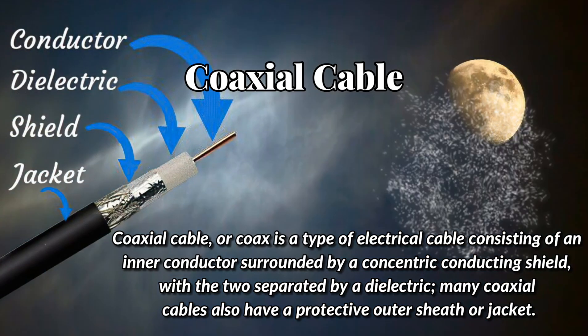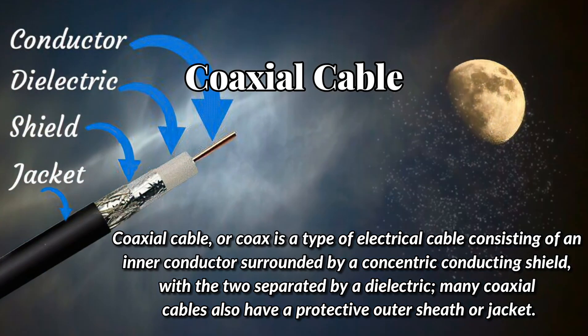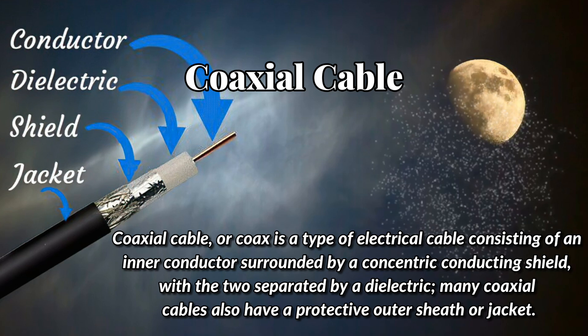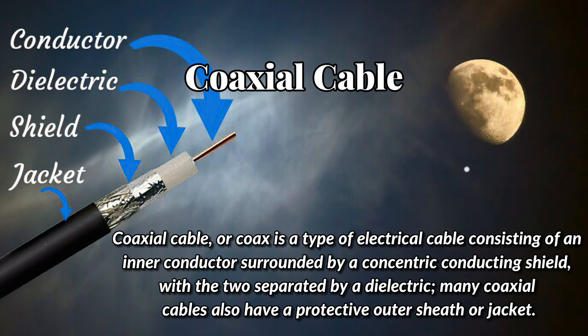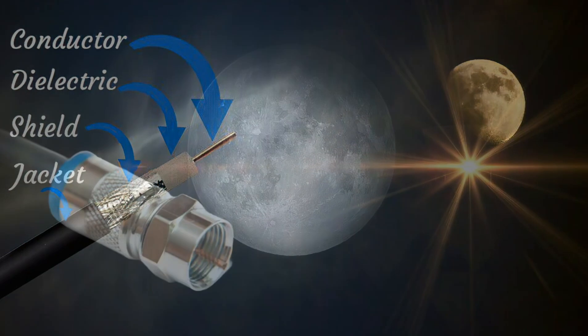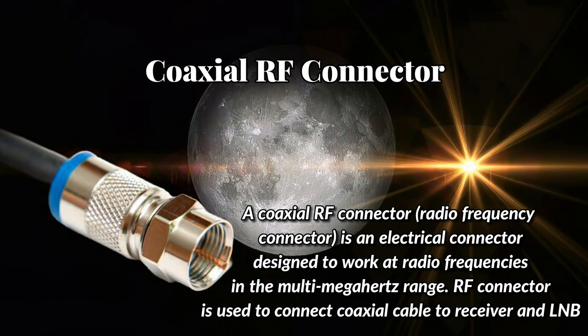Coaxial Cable: A coaxial cable (or coax) is a type of electrical cable consisting of an inner conductor surrounded by a concentric conducting shield, with the two separated by a dielectric. Many coaxial cables also have a protective outer sheath or jacket. A coaxial RF connector (radio frequency connector) is an electrical connector designed to work at radio frequencies in the multi-MHz range. The RF connector is used to connect the coaxial cable to the receiver and LNB.